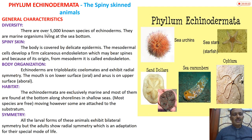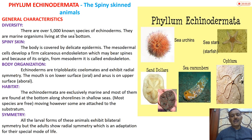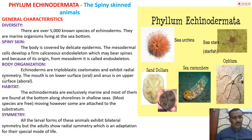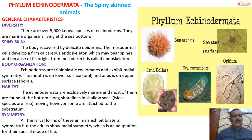First, diversity: there are 5000 known species of echinoderms. They are marine organisms living at the sea bottom. They are found exclusively in the sea - not in fresh water.